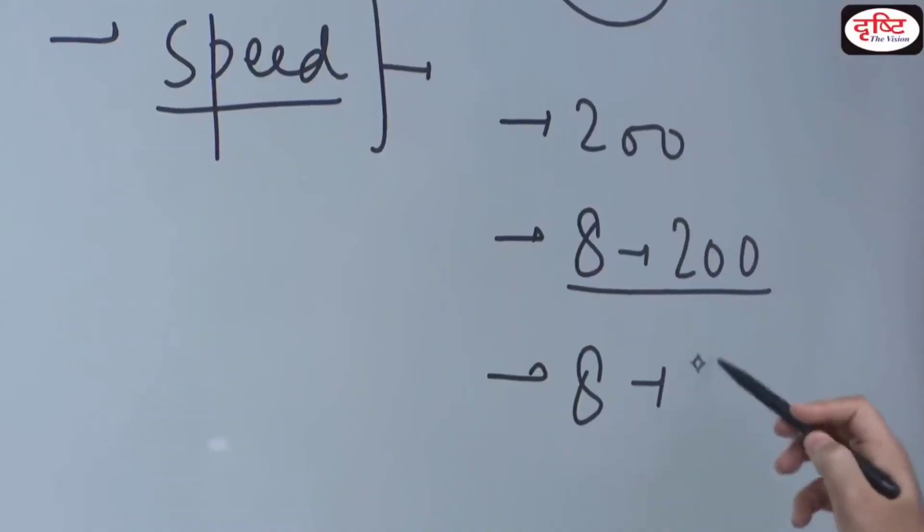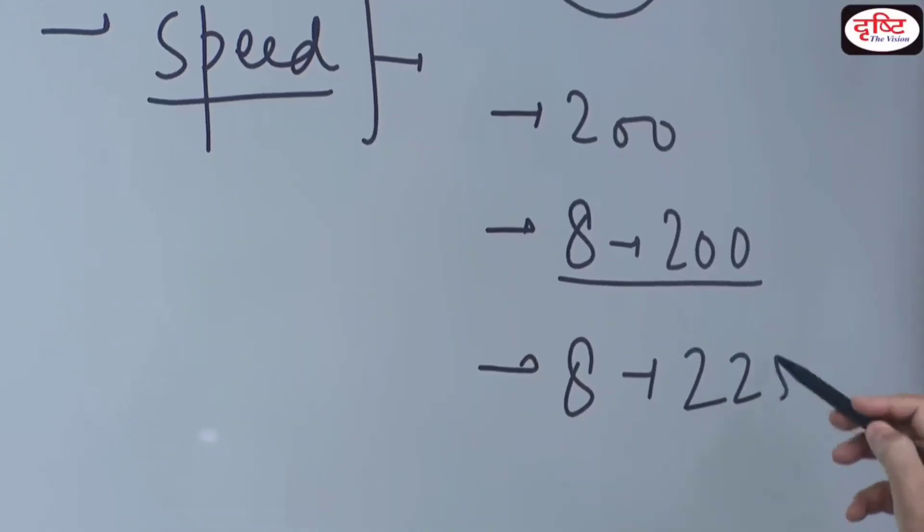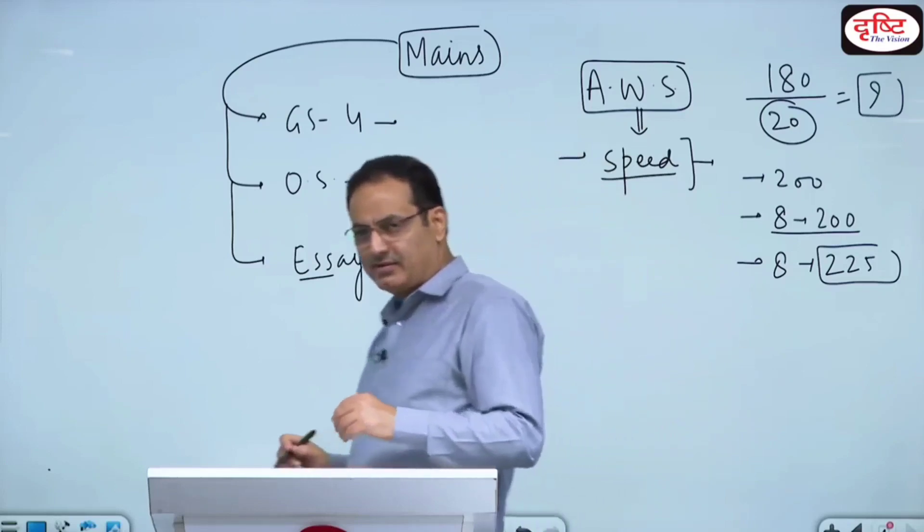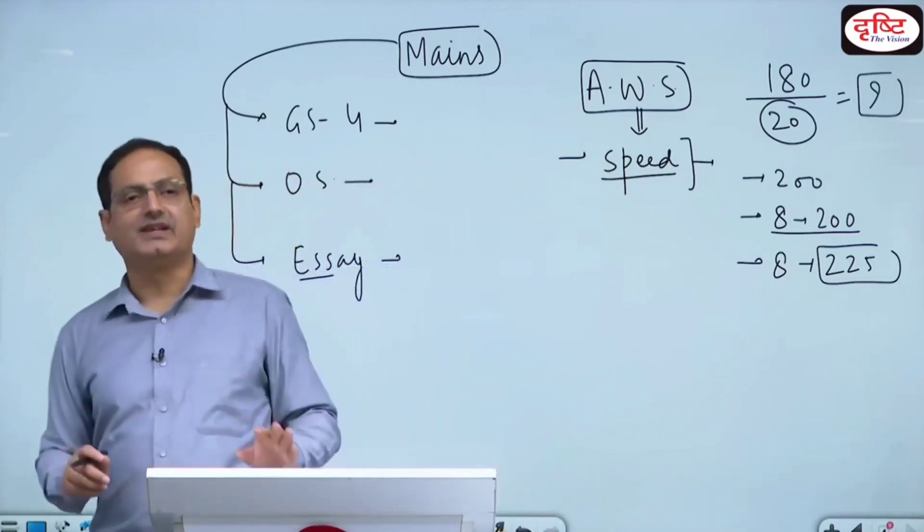So one more thing - you have to write an average of 220 words in 8 minutes. 220, 230, 240. You have to target an average of 220, 230, 240 words.